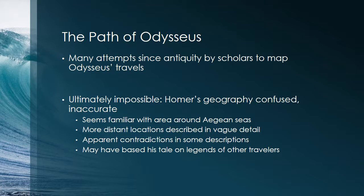Being that this is a travel narrative, there have been many attempts since antiquity to map out Odysseus's travels. But while some places can be located, it's ultimately impossible to get a fully accurate map. Homer's geography as described in the Odyssey is not exactly accurate. In terms of the Aegean Sea — between modern-day Turkey and modern-day Greece — he's basically familiar with that area. But more distant locations are very vague, and sometimes contradictory, probably because he was basing his tale on legends of other travelers that he mixed together in crafting his narrative.